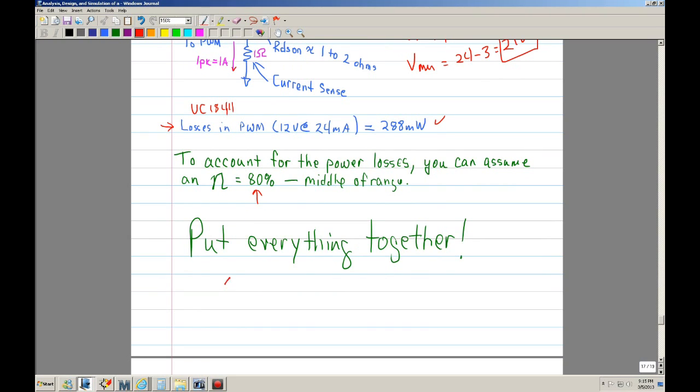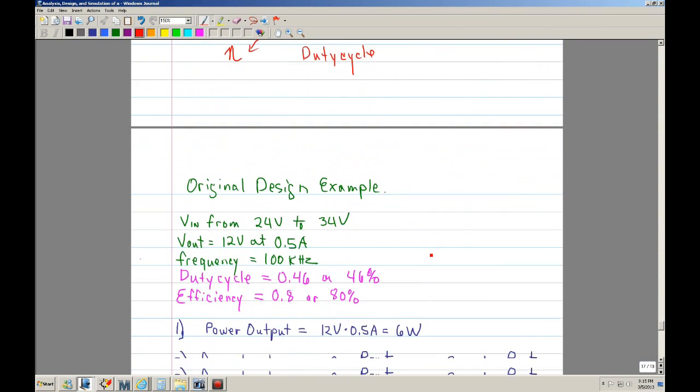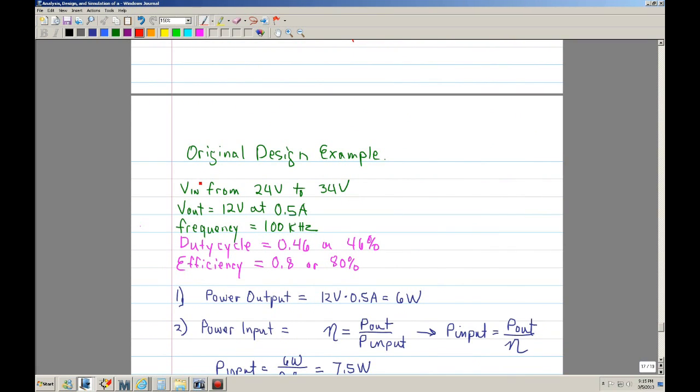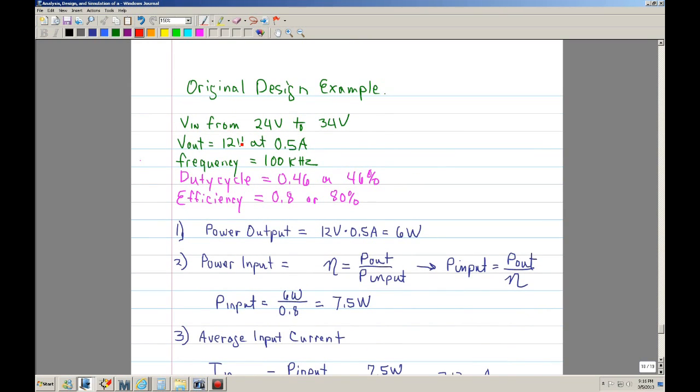In other words, everything together in regards to putting in efficiency and using a duty cycle that's more realistic. Here we have the original design example. The original design example stated that we had V in from 24 volts to 34 volts, and V out of 12 volts at half an amp, and a frequency of 100 kilohertz. Now, this is what's different. Remember, in part one, I used a duty cycle of 0.5 and an efficiency of 100%. So now we're making the changes to account for real-world characteristics and for the power losses. So now we're going to use 0.46 and 0.8. So how does that affect the design?